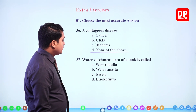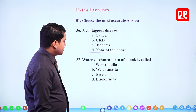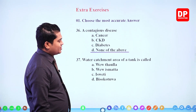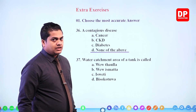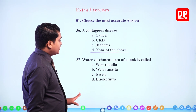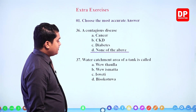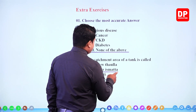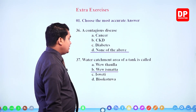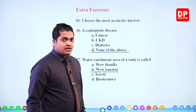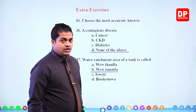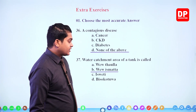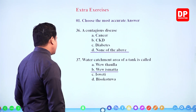Next: water catchment area of a tank is called — the 'wel ismat' (the area parallel to the water level which has flora and rich biodiversity).